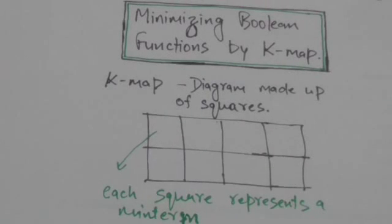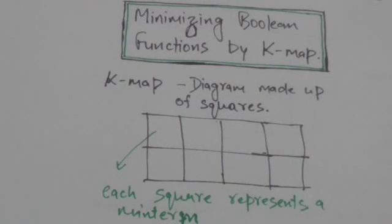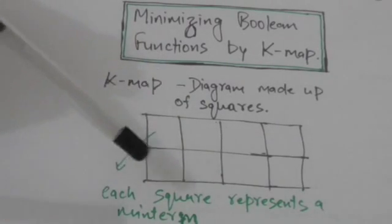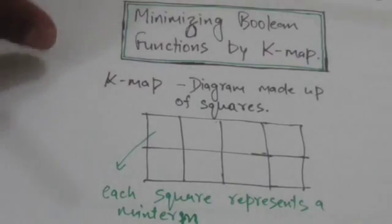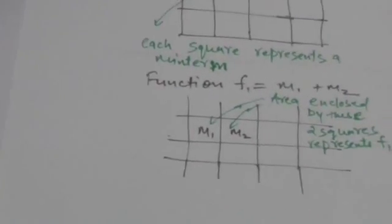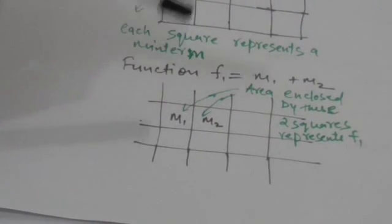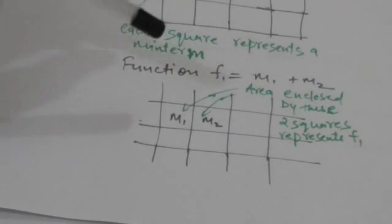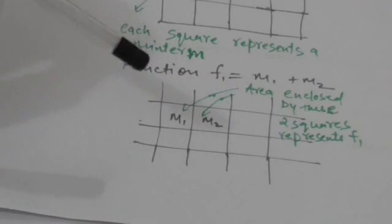Hello friends, welcome back. In this tutorial we are going to learn about how we can minimize a boolean function by K-map. We minimize a boolean function to reduce the complexity of logic gates that implement that boolean function. K-map is a diagram made up of squares — each square represents a min term. A function can also be represented by a K-map.